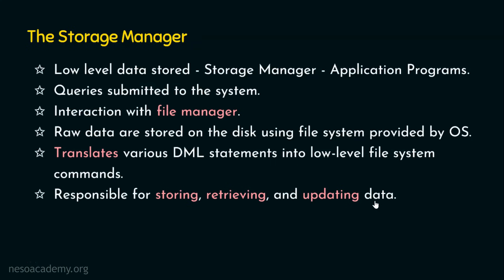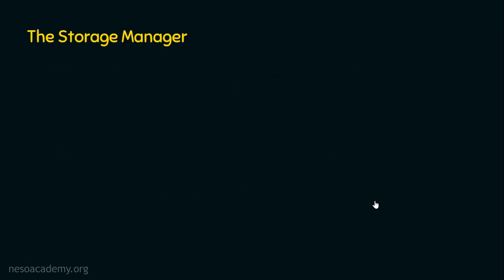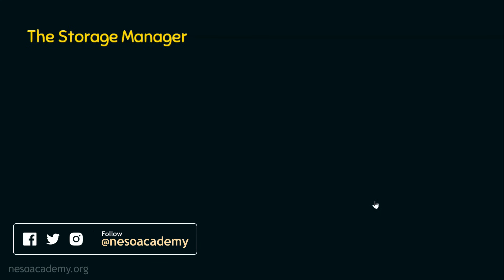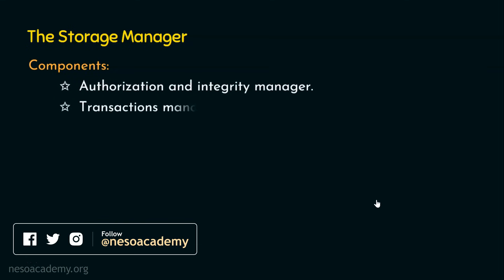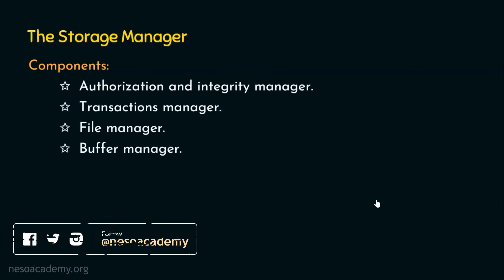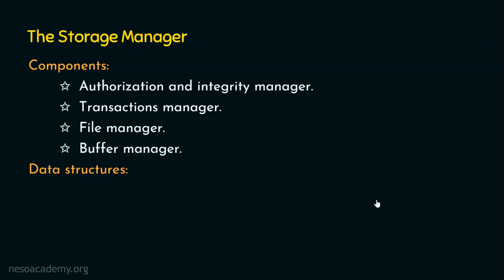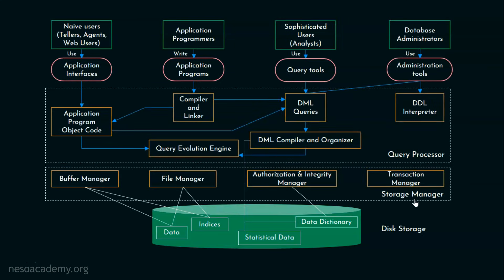Now we will see the various managers in the storage manager. As per the architecture diagram, there are four components or managers in the storage manager part. Number one: the authorization and integrity manager. Number two: the transaction manager. Number three: the file manager. And number four: the buffer manager. We are also going to look at various data structures — the data files, the data dictionary, and the indices. Let's focus first on the buffer manager.